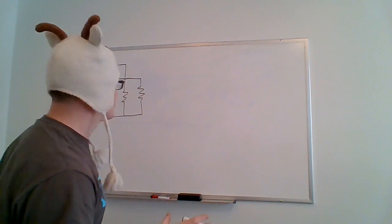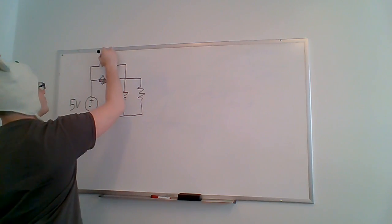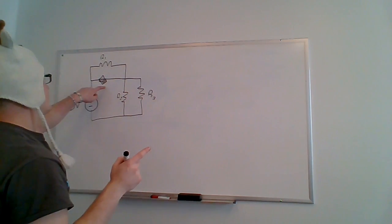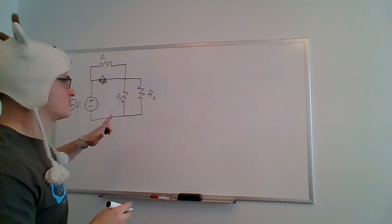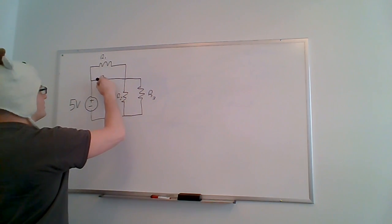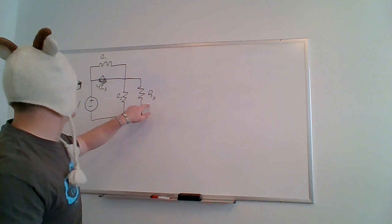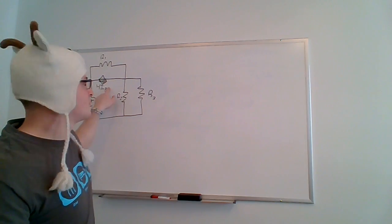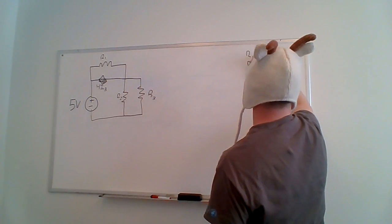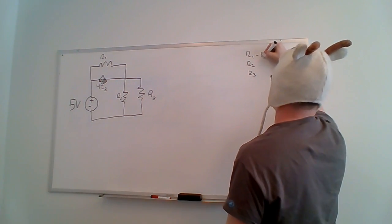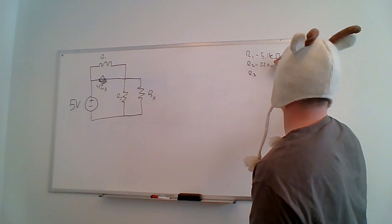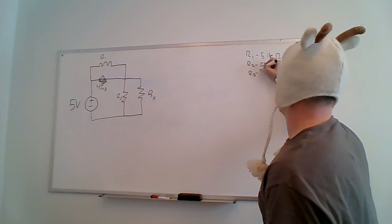Now we're going to name everything. This will be R1, this is R2, and this is R3. This dependent source is going to be a current source equivalent to four times I3 — meaning it equals four times the current that flows through R3. For our resistor values: R1 will be 5.1 kilohms, R2 will be 220 ohms, and R3 will be 1 kilohm.